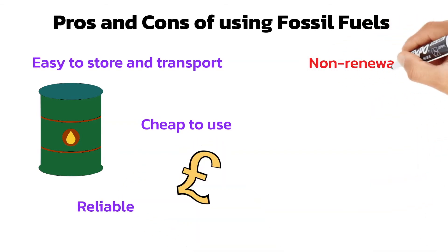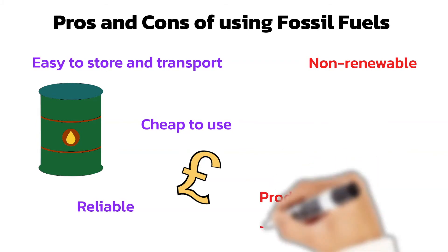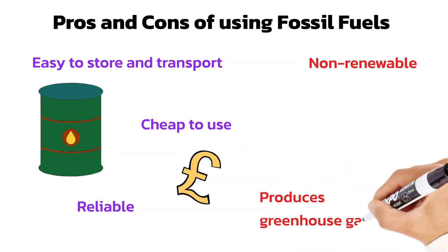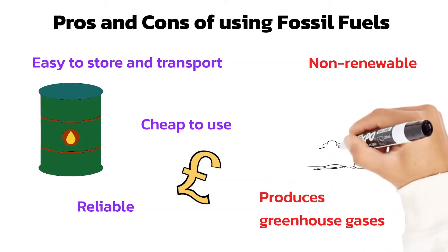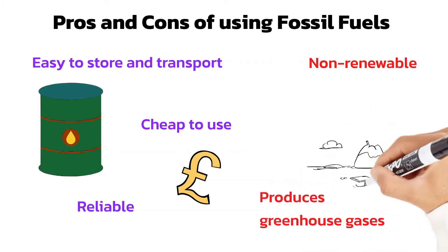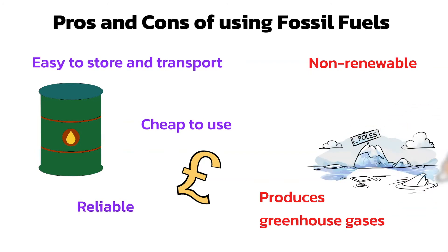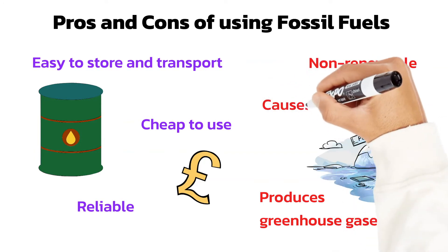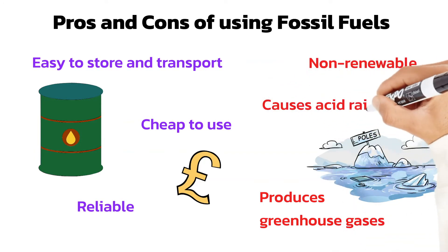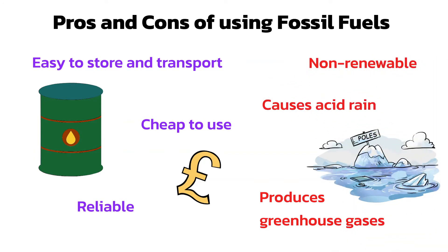The negatives of using fossil fuels include they're non-renewable so they can't be replenished. They produce greenhouse gases, such as carbon dioxide, which is a factor in global warming. They also produce sulfur dioxide which causes acid rain.